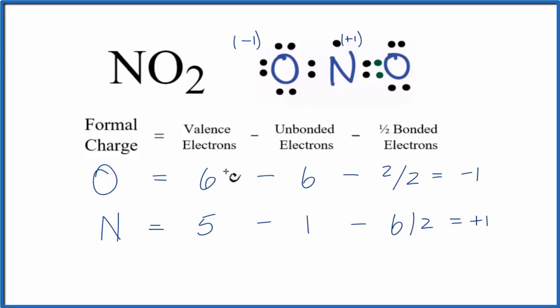Finally, we'll do the oxygen with the double bond. Oxygen, group 16, we subtract the unbonded, two, four.